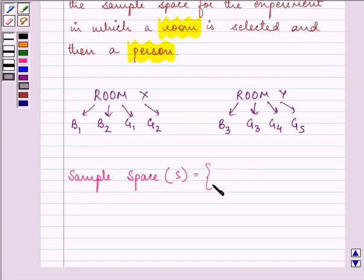Now if we select room X first, so from room X we have a possibility of selecting boy 1 or boy 2 or girl 1 or girl 2. Right?